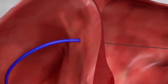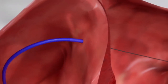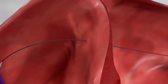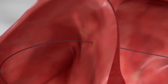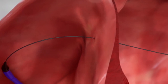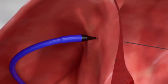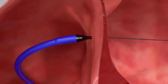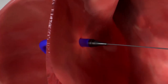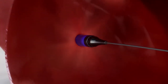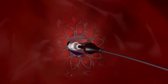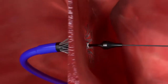The catheter is then withdrawn, leaving only the guide wire in place in the left atrium. The interatrial shunt device is advanced over the guide wire and positioned through the small opening in the heart wall. The implant is then deployed in a controlled stepwise fashion, forming a small passage between the atria.